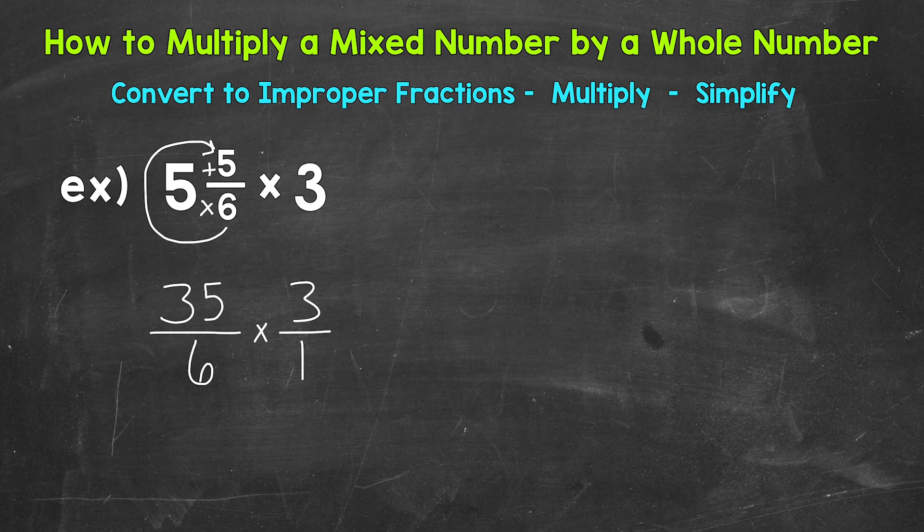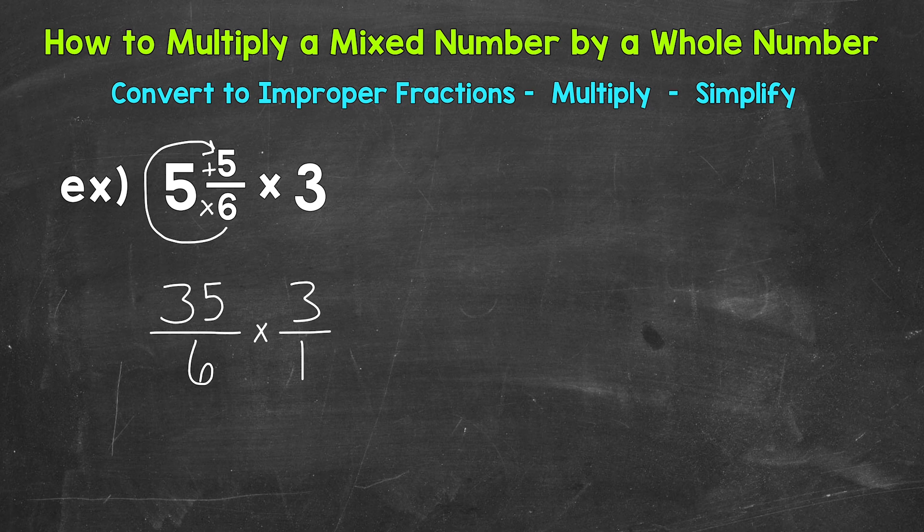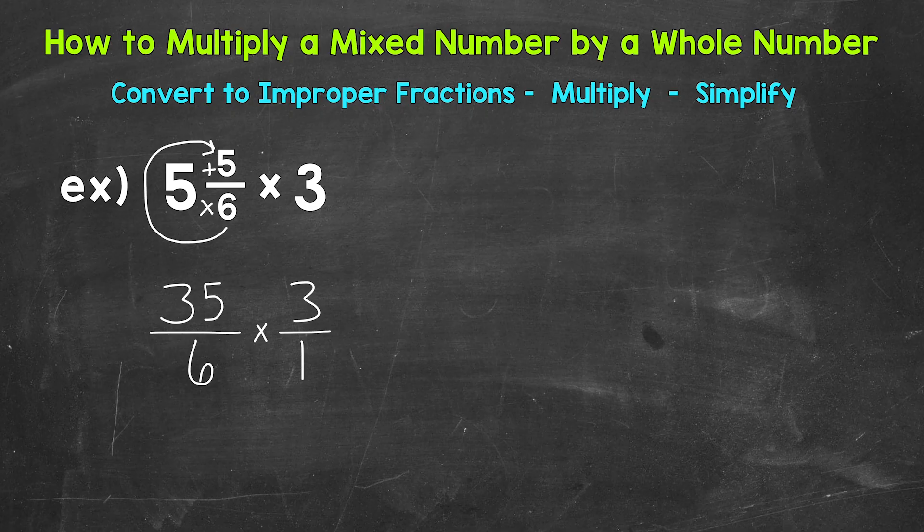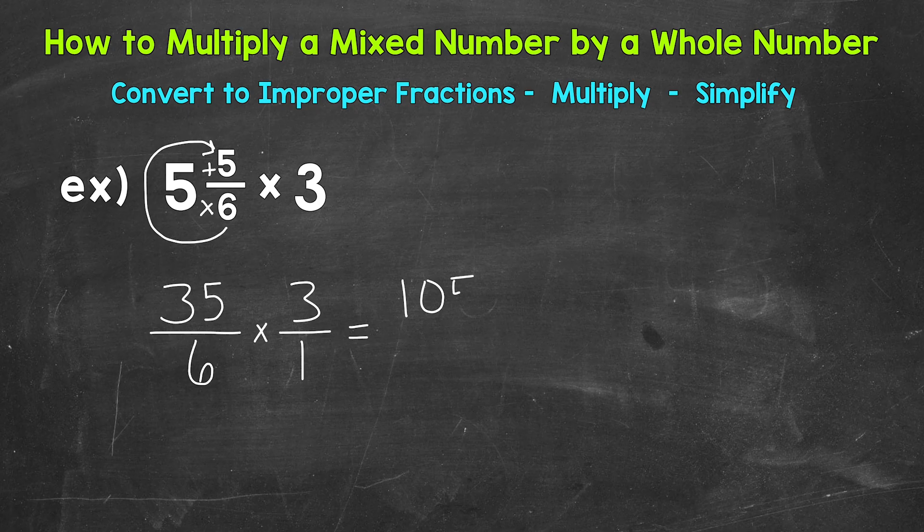So once we're at this point, we can multiply straight across. So numerator times numerator and denominator times denominator. Let's start with the numerators. So 35 times 3 gives us 105. As far as our denominators, we have 6 times 1, which is 6.